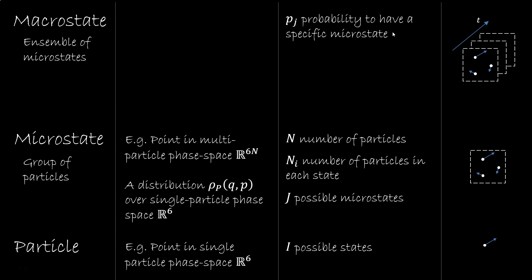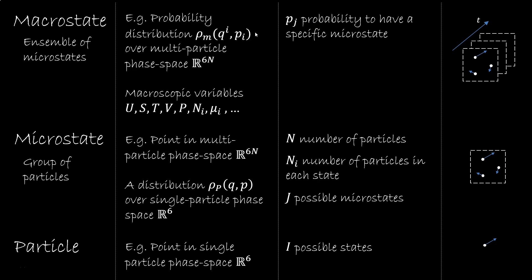We have pj, the probability to have a specific microstate, and this is usually represented by a distribution rho m over the multi-particle phase space. But a microstate is also defined by the macrostate variables, which are, as we said, averages. I'll leave the details of how exactly these are related for some other time. It doesn't really play a role here.